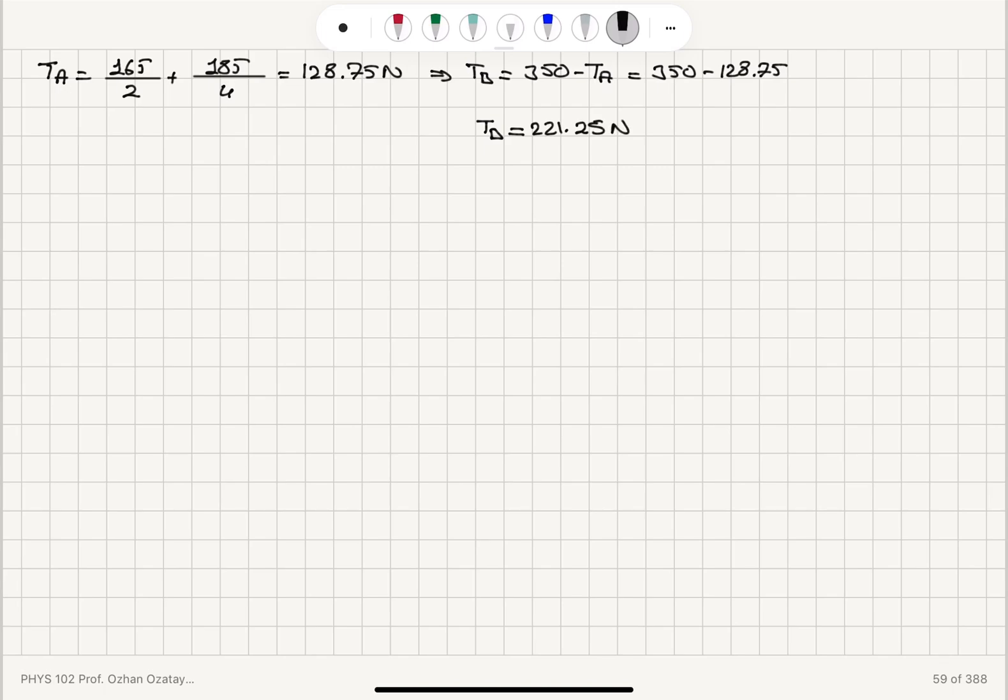Now, these wires will be vibrating in their fundamental mode. So what is the boundary condition? The two end points are fixed. So the fundamental mode is a node, anti-node, node.